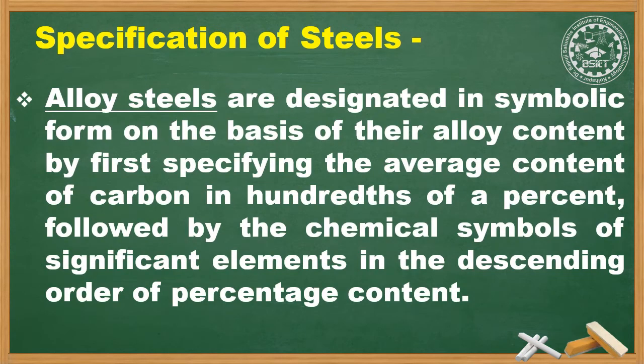Alloy steels are designated in symbolic form on the basis of their alloy content by first specifying the average content of carbon in hundredths of a percent, followed by the chemical symbols of significant alloying elements in descending order of percentage content.